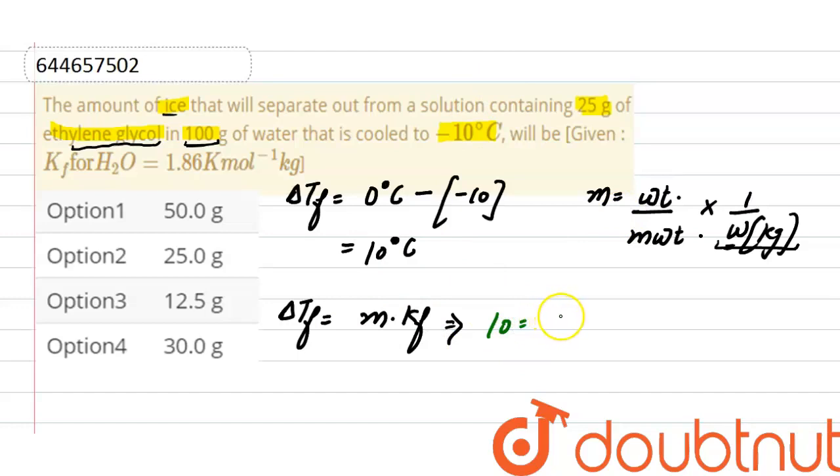Molality, that is weight of solute here is 25, and molecular weight of ethylene glycol, which has the molecular formula CH2OH-CH2OH, is 12 into 2 plus 4 into 1 plus 16 into 2 plus 2 into 1, and that will be 62.